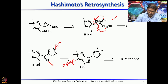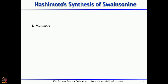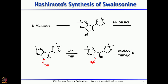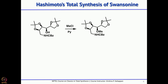Let us see how Hashimoto's group successfully completed the total synthesis of swainsonine using this key reaction. First, D-mannose was protected as the diacetonide. This on treatment with hydroxylamine hydrochloride forms the oxime. Once you form the oxime, you treat with LiAlH₄ — oximes can be completely reduced to the corresponding primary amine. Then that NH was protected as CBZ by treating with benzyloxycarbonyl chloride.